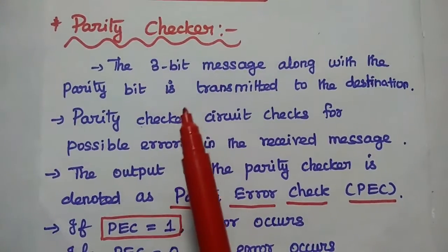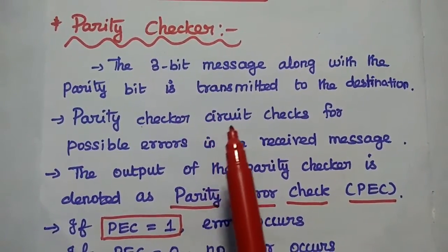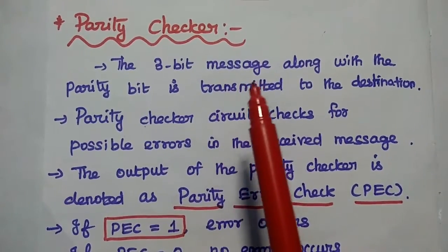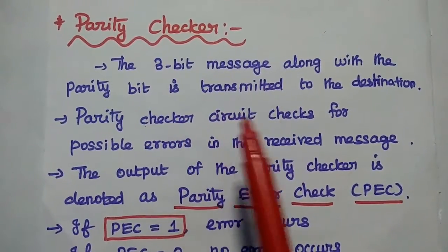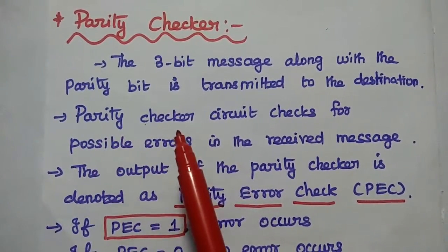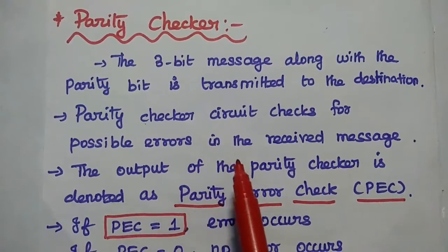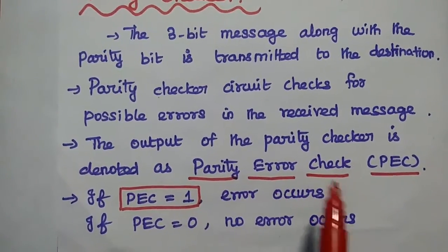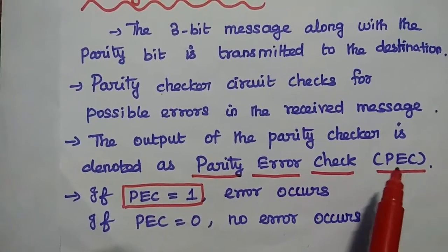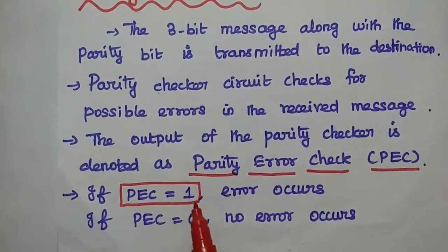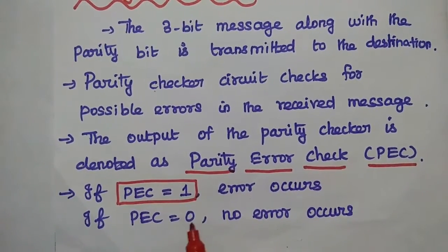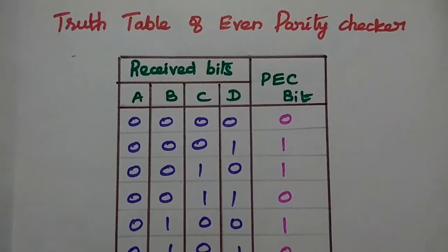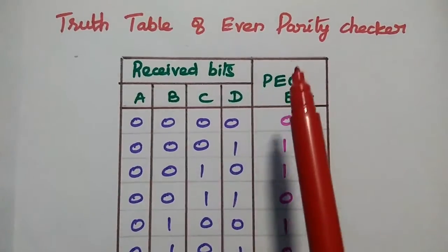Parity checker is the logic circuit that checks the parity in the received signal. In this example, we are transmitting 3-bit binary information along with the parity bit to the destination. The parity checker checks for possible errors in the received message. The output of the parity checker is denoted as parity error check, simply PEC. If PEC equals 1, error occurs. If PEC equals 0, no error occurs.